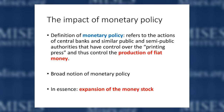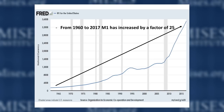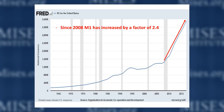To illustrate, the money stock M1 for the US from 1960 to 2018 shows quite a significant increase. From 1960 to 2017, the money stock M1 multiplied by a factor of 25, corresponding to an annual growth rate of 5.8%. Most notably, from 2008 to 2017 alone, the money stock multiplied by 2.4, corresponding to an annual growth rate of 11.8% — so the expansion of the money stock has accelerated, justified by the Great Recession.